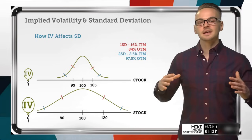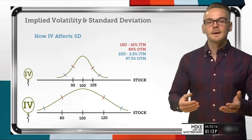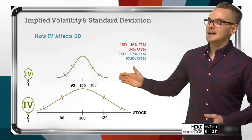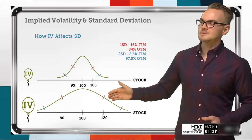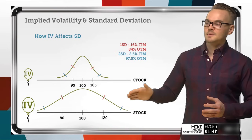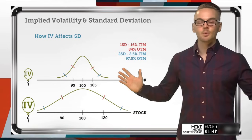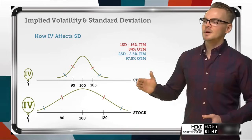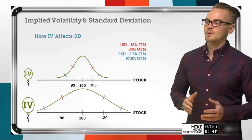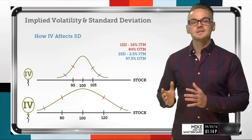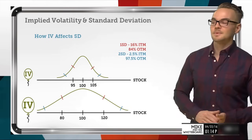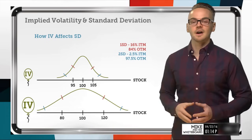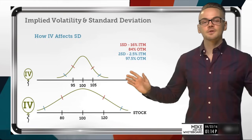This is the power of implied volatility and its effect on standard deviation. Standard deviation gives us context around implied volatility. As you can see, implied volatility is much higher in the bottom graph, which gives us that big wide range of 20 points to the upside and 20 points to the downside, compared to the low volatility environment where we're only getting 5 points each way.